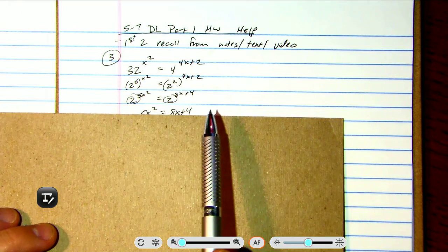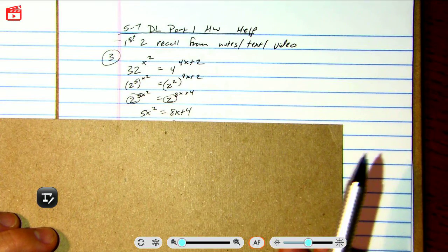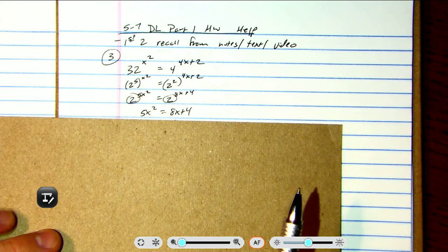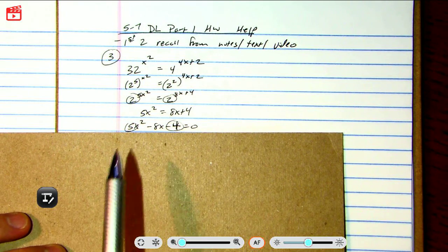Distribute, and then once you get the bases the same, set the exponents equal. Now this one gets really hairy because once you get everything on the left side, it's a quadratic but the leading coefficient is 5.